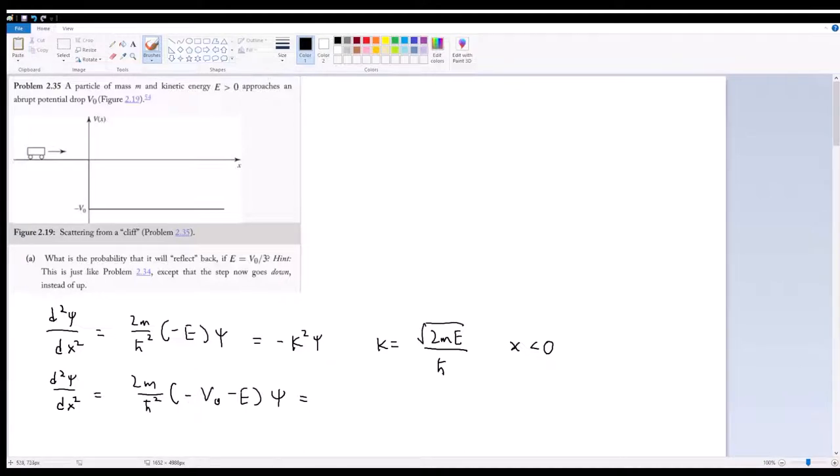We have negative V0, and then E is positive. E is greater than V0, but this is subtracted by a positive. So this is going to be still negative. So this is going to be negative L² ψ, where L is going to equal the square root of 2m times V0 plus E divided by ℏ when x is greater than zero.